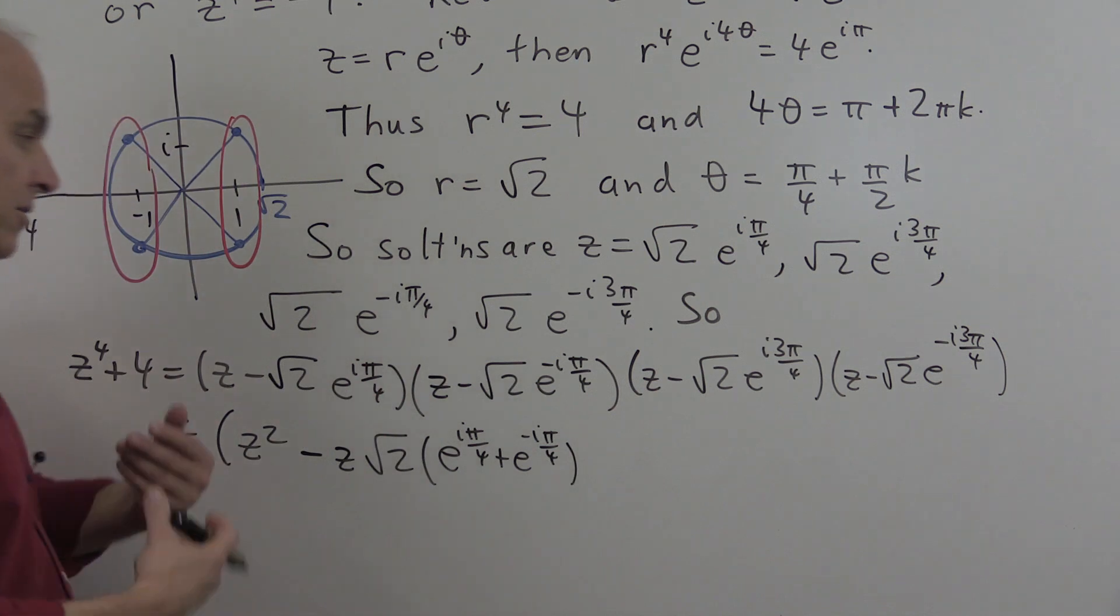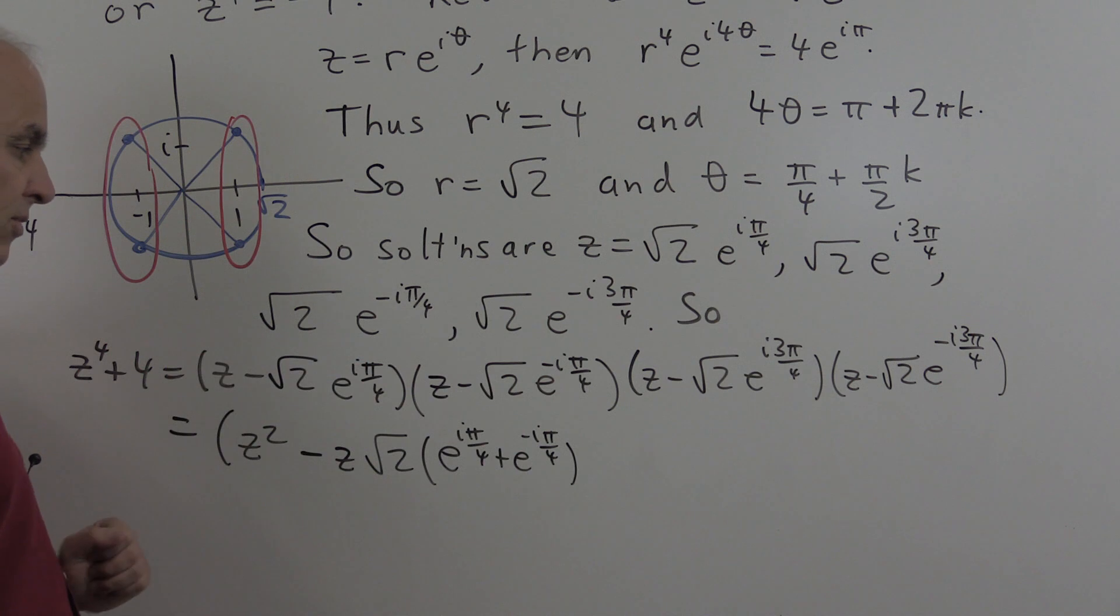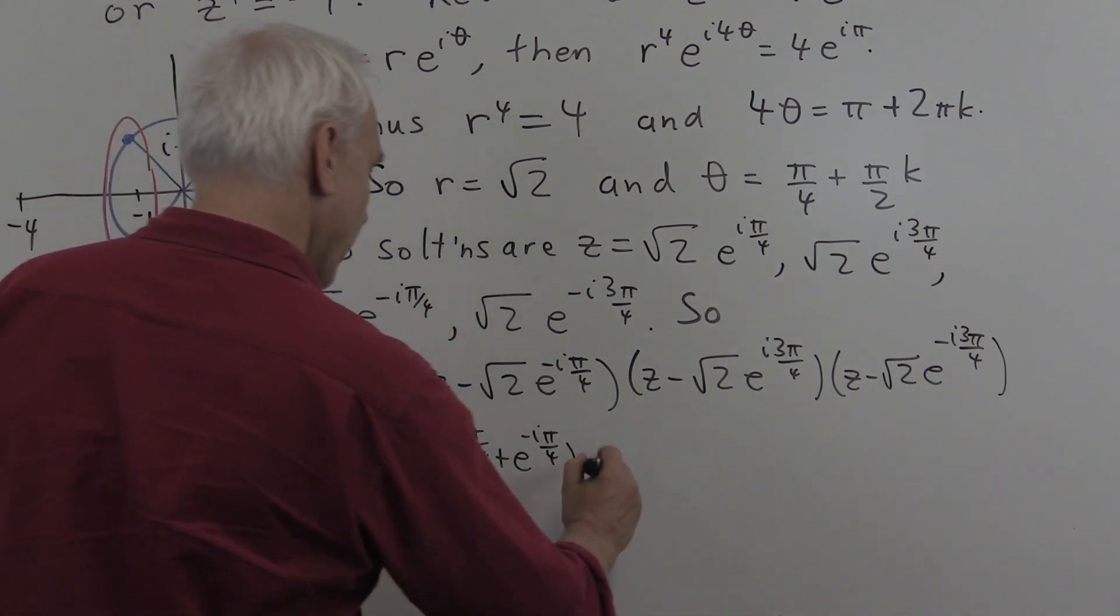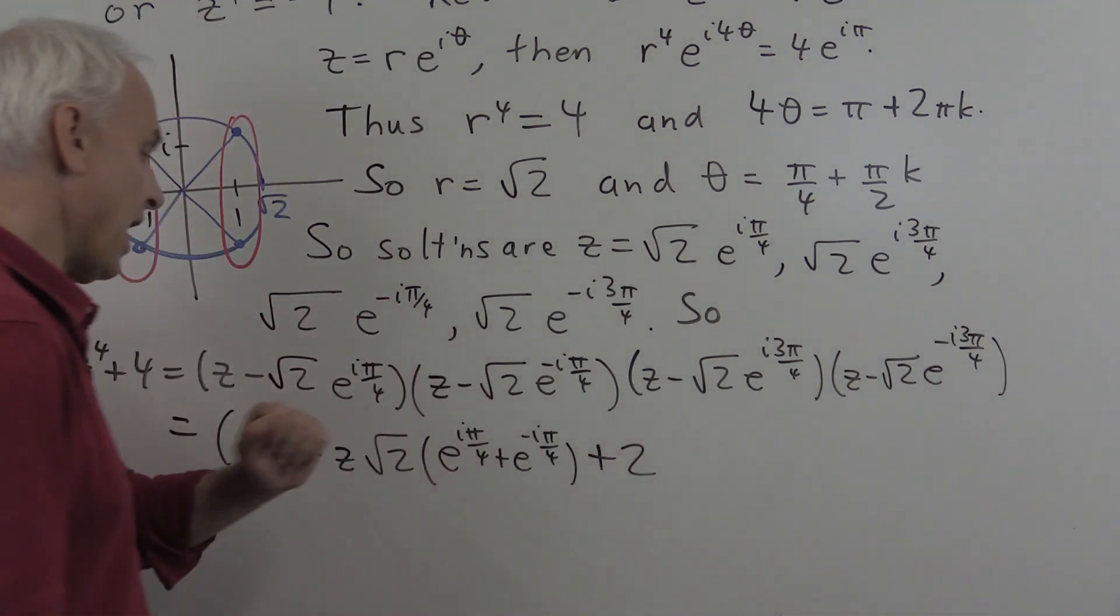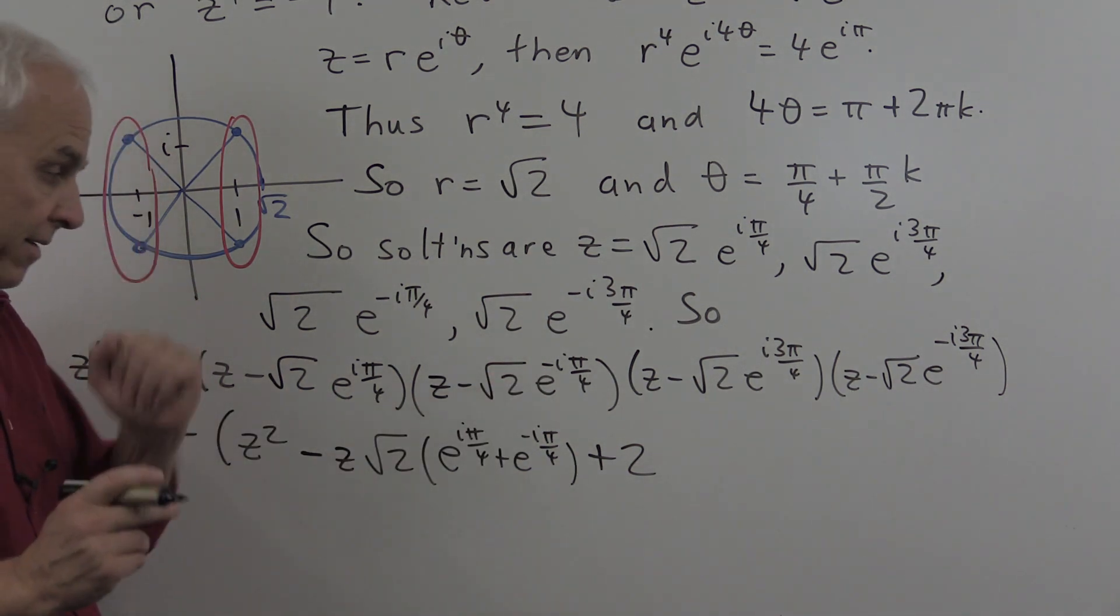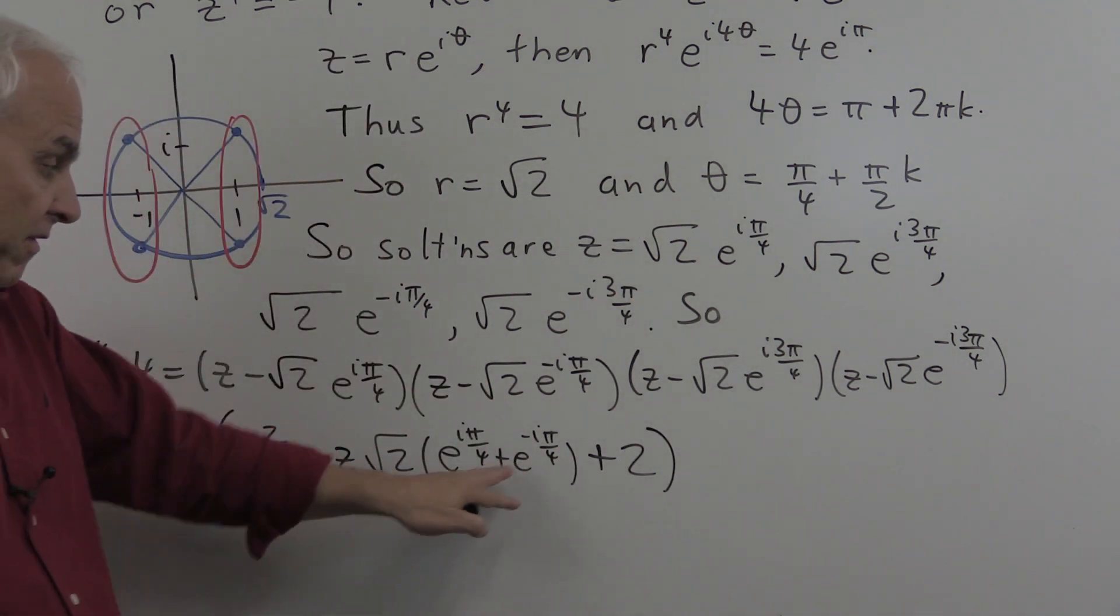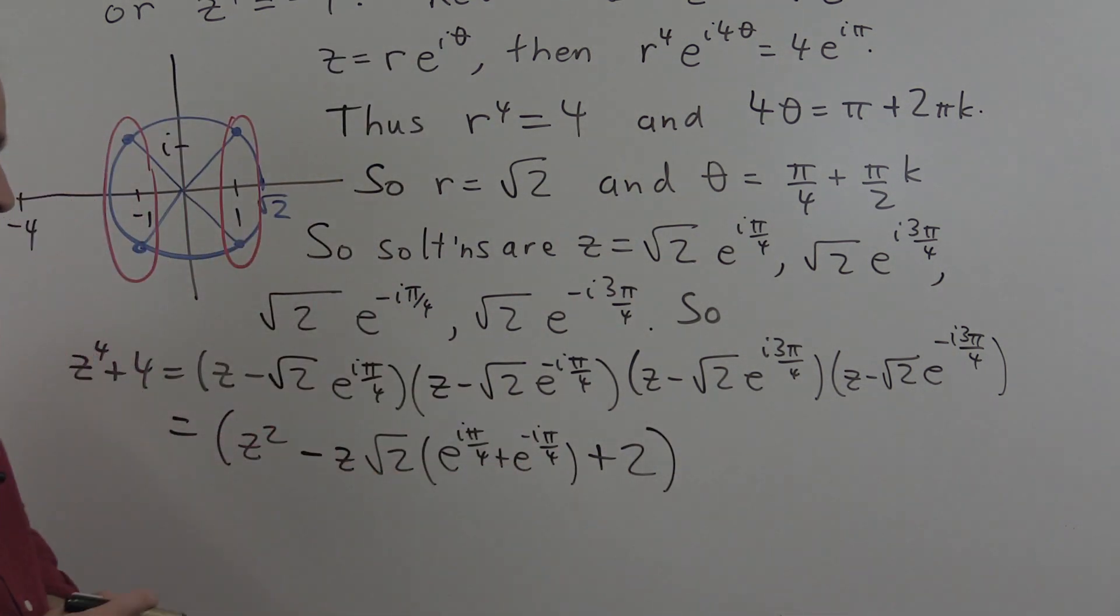And the constant term is this times this will be square root of 2 squared, which is 2. And the e to the i pi by 4 times e to the minus i pi by 4 is just 1. So we get this expression here. We'll still have to simplify this, but that's not going to be too hard.